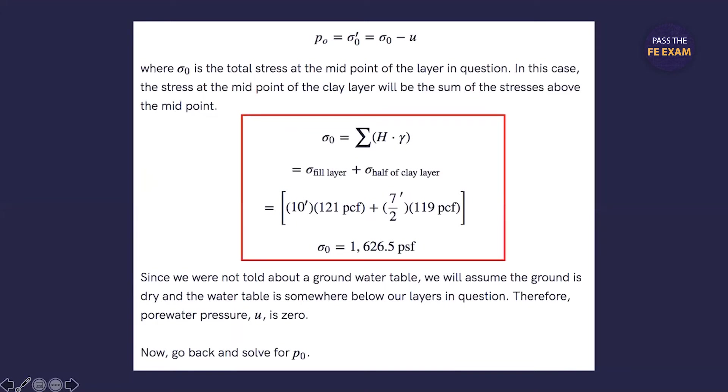Since we were not told about a groundwater table, we will assume the ground is dry and the water table is somewhere below our layers in question. Therefore, pore water pressure U is zero. Now, go back and solve for p0.